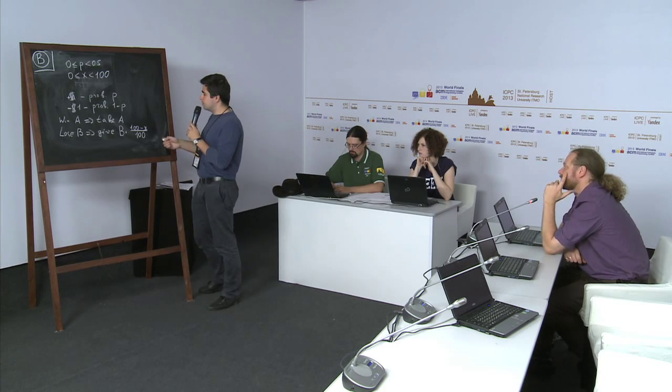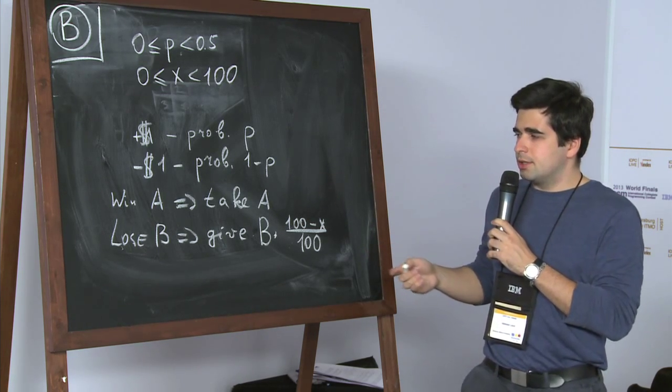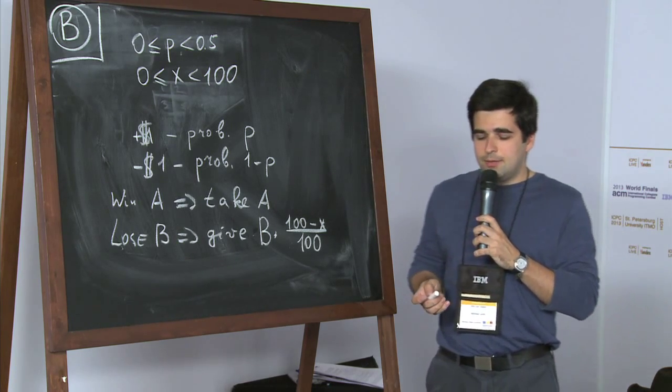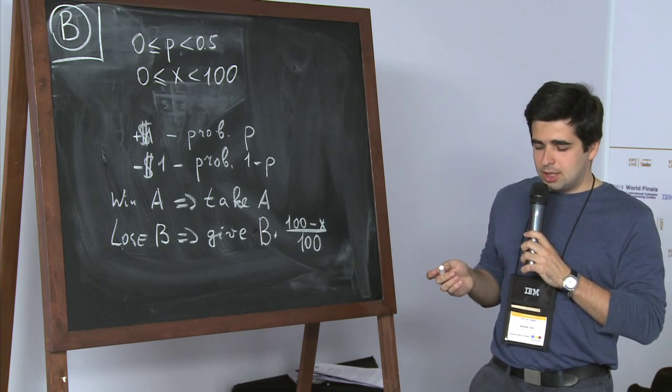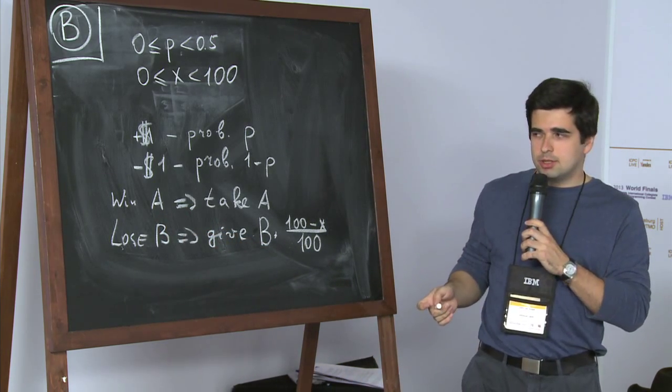To solve this problem you have to make several observations. First observation is that the only thing that your strategy may depend on is the current amount of money that you have. At each point you decide to either continue the game or to stop. And if you think a little bit more, then you can understand that there are only two parameters that determine the strategy: some positive number A that makes you stop if you have already won A dollars, and some negative number B that makes you stop if you have lost.